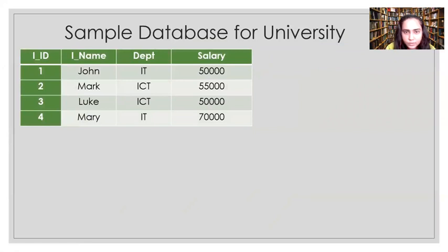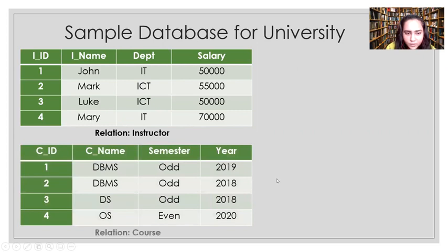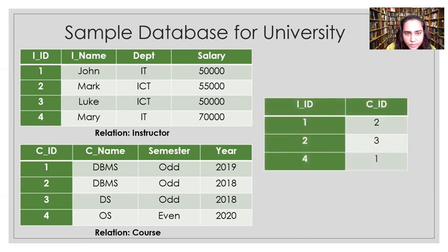This is the sample database I'm going to use. The first relation is called instructor, which contains the ID of the instructor, the names of four instructors, their departments, and their salaries. Then there's another relation called course containing the course ID, names of four courses, the semesters — odd and even — and the year in which those courses were taught. Relations are nothing but tables, so I'll use both terms interchangeably, though in the relational model it's more appropriate to call them relations.